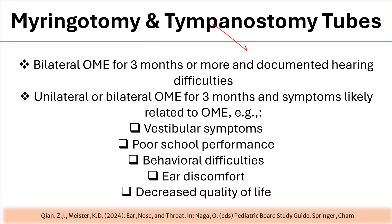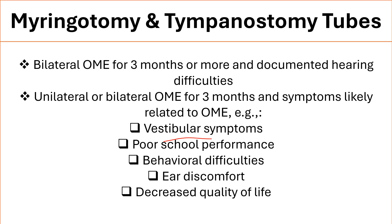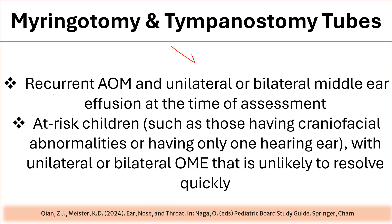Indications for tympanostomy tubes include: bilateral otitis media with effusion for 3 months or more with documented hearing difficulties; unilateral or bilateral otitis media with effusion for 3 months with symptoms likely related to otitis media with effusion such as vestibular symptoms, poor school performance, behavioral difficulties, ear discomfort, or decreased quality of life. Other indications include recurrent acute otitis media with unilateral or bilateral middle ear effusion at the time of assessment, and at-risk children with craniofacial abnormalities such as cleft palate or only one hearing ear, with otitis media with effusion unlikely to resolve quickly.